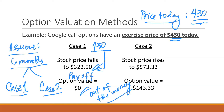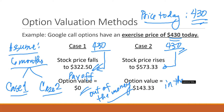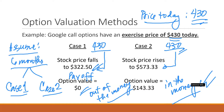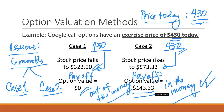Under case two, the stock price from $430 increases to $573.33. There was an increase in stock price, and comparing it against the strike price of $430, the option is in the money. Therefore, you will exercise the option. The option value or payoff at that time is $143.33, which is simply $573.33 less $430, the strike price. So that's the scenario we have currently.